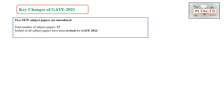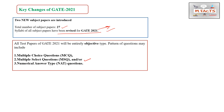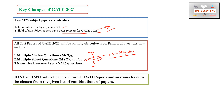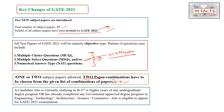To conclude, the key changes made by IIT Bombay for GATE 2021 are: the total number of subject papers is now 27 with two new papers introduced; the syllabus of all subjects has been revised, so visit the IIT Bombay website to download your specific syllabus; Multiple Select Questions (MSQ) with no negative marking have been added to the question pattern; and candidates can now write two papers from the defined combination list.